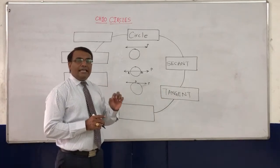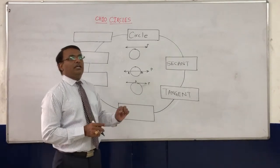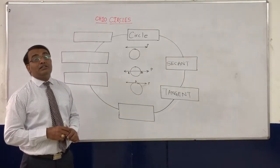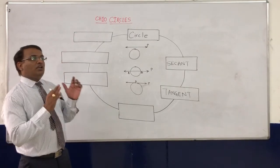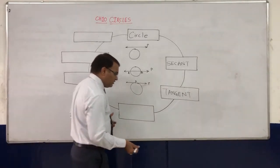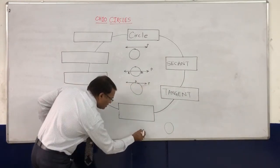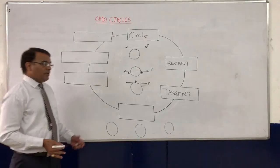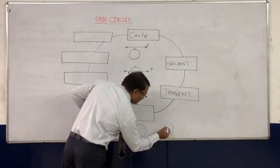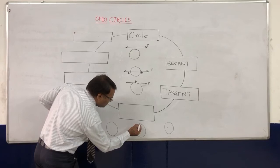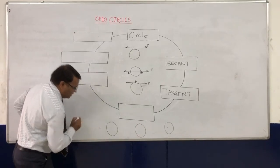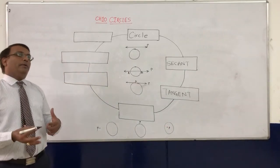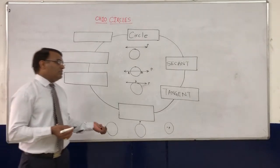Talking about the next point: how many tangents can a circle have? There are three different cases depending on three different diagrams. In the first case, the point is lying inside the circle. In the second case, the point is exactly on the circle. And in the third case, the point is outside the circle. We will see how many tangents a circle can have based on these three different situations.